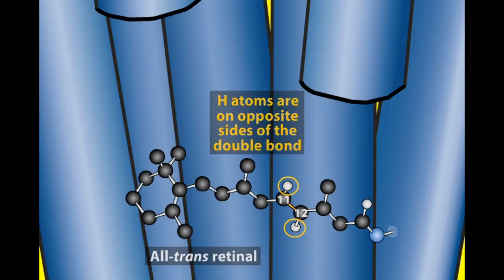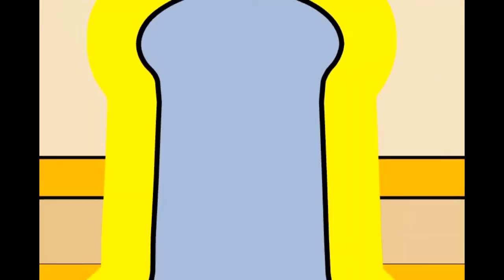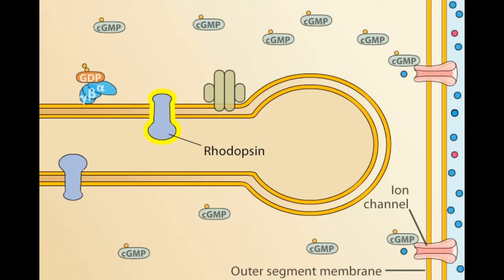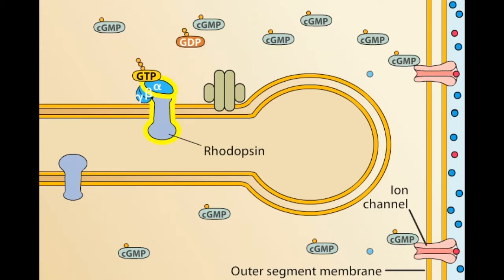The changes in rhodopsin lead to a cascade of events in the cell. The next component in the cascade is a trimeric G protein called transducin, which, in its inactive state, is bound to GDP. The altered rhodopsin molecule activates transducin, allowing it to exchange its GDP for GTP.